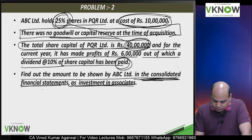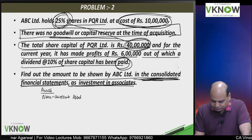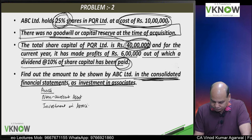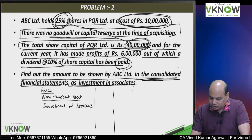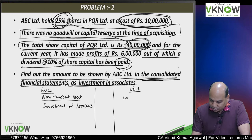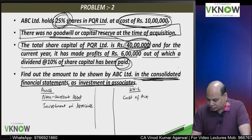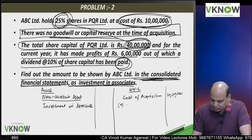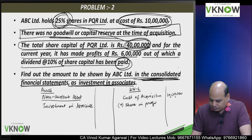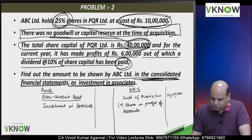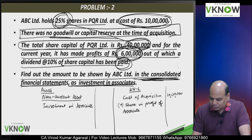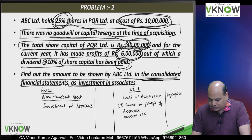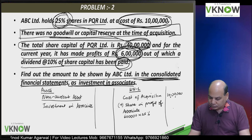In this question, on the asset side we will have non-current asset and under that we will have investment in associate. The question is how much amount we will put, so we will put a working note. In the working note, cost of acquisition is 10 lakh. Then you will add share in profit of associate. The problem says 6 lakh rupees profit was made, so your share in profit is 6 lakh into 25 percent, that is 1 lakh 50,000.